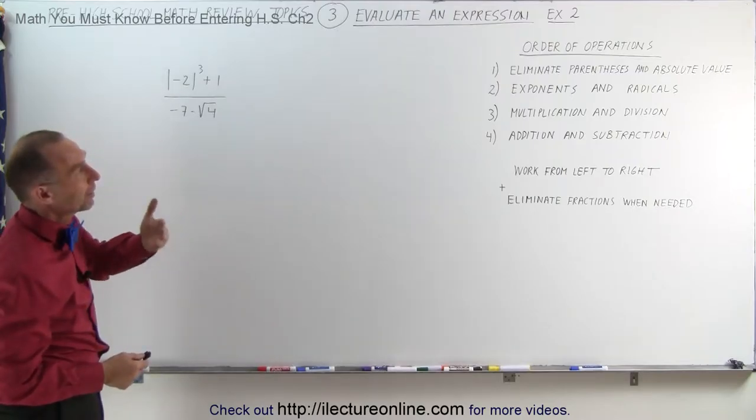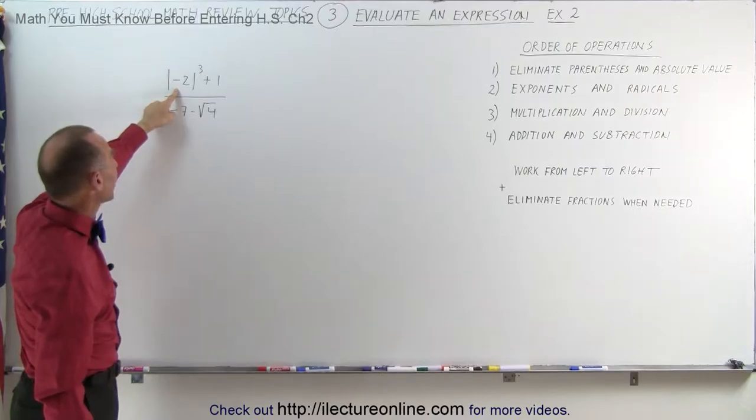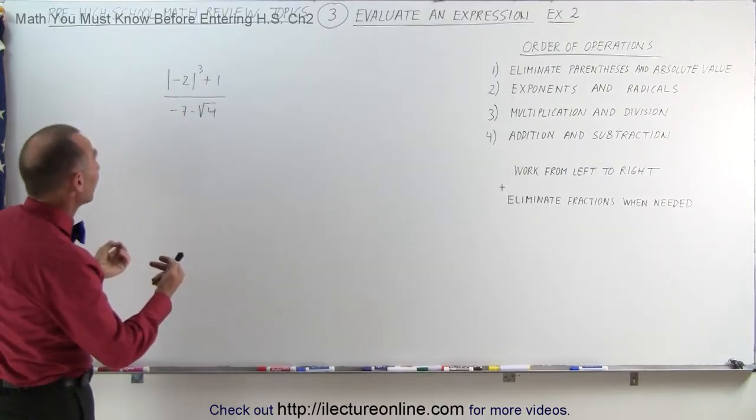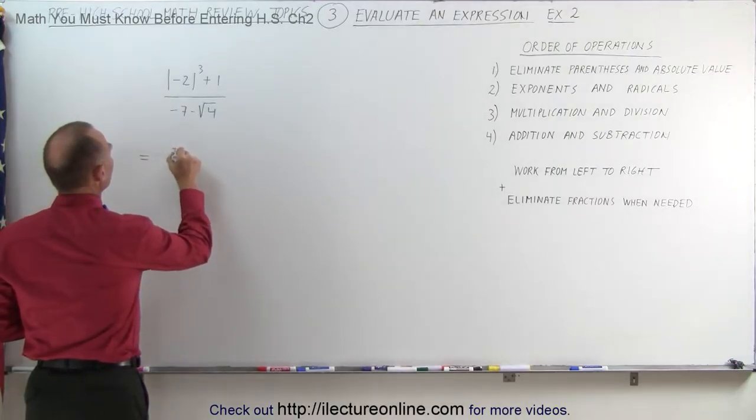First of all, we want to eliminate parentheses and absolute value symbols. We have one up here at the top, the quantity minus 2 inside the absolute value symbol. So let's first get rid of those symbols and make that into a positive 2.